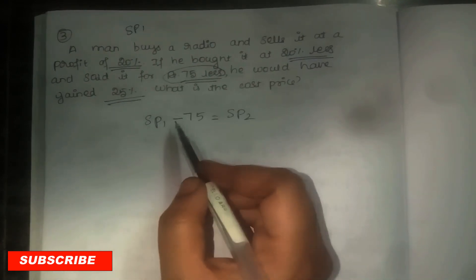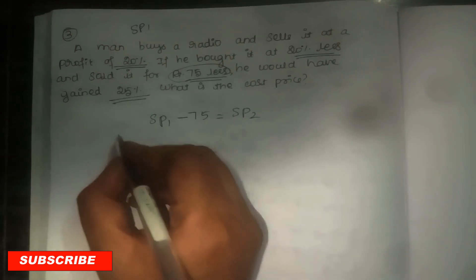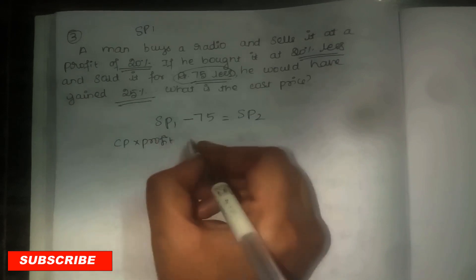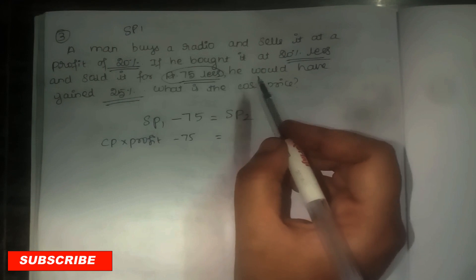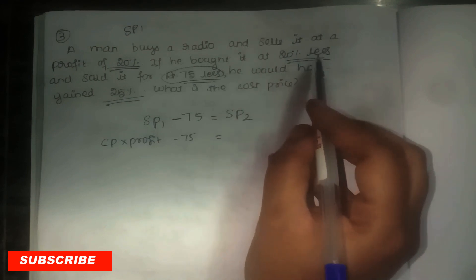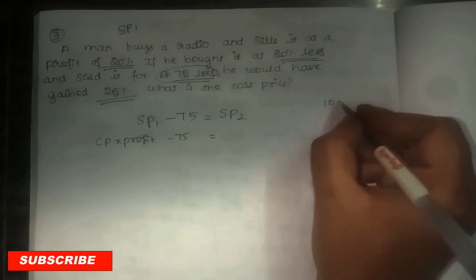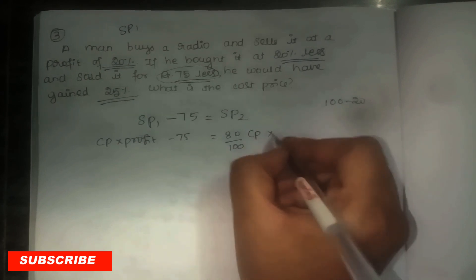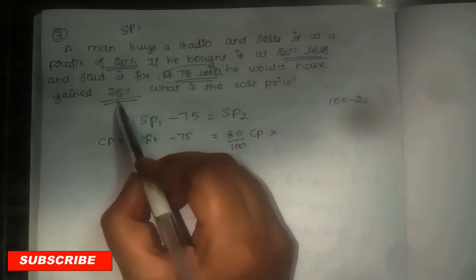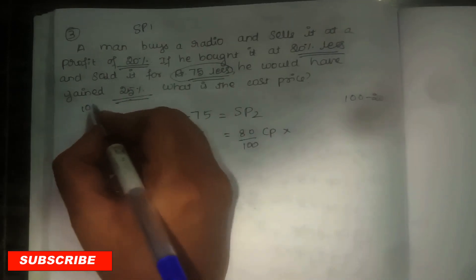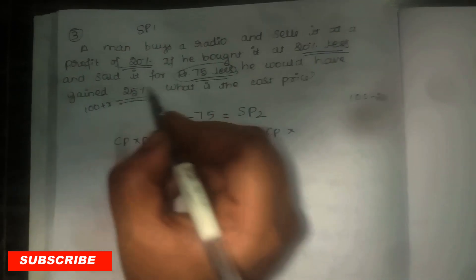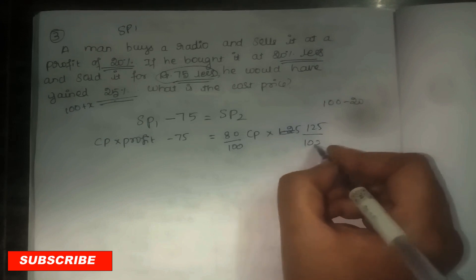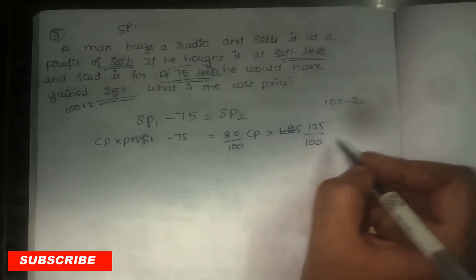SP1 is equal to CP × profit. CP × profit − 75 is equal to SP2. For the second selling price, he bought 20% less, meaning 100 − 20 = 80% of CP, written as 80/100 × CP. He makes a profit of 25%, written as 125/100 = 1.25. For cancelling purposes, we put it as 125/100.